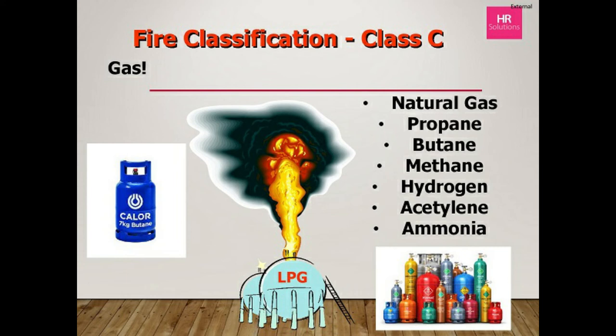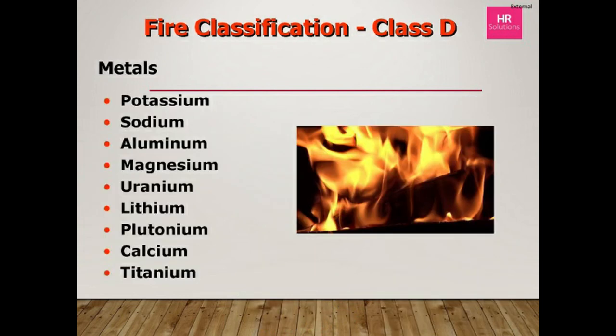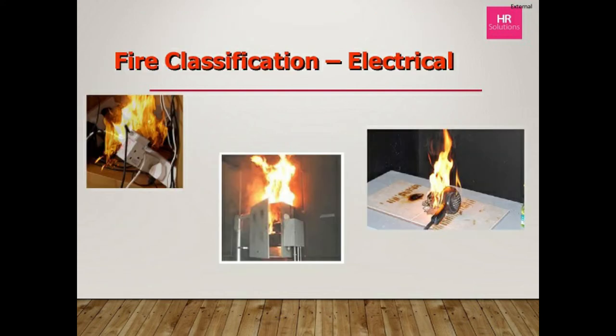Class D covers burning metals including potassium, sodium, aluminium, magnesium, uranium, calcium, and titanium — these have low burning-point properties unlike steel, tin, and iron. Class E — not a formal class but a useful category — covers electrical fires from misuse or faulty wiring, overloaded consumer units, or misuse of extension blocks. These are illustrated by photos of a melted hair dryer, an overloaded consumer unit, and daisy-chained extension blocks.